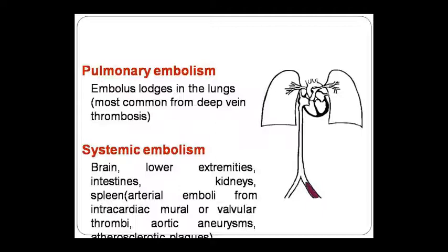The course of pulmonary embolism depends on the size of the embolus. If it is very small, it passes through smaller branches and lodges in alveolar vessels. If it is very large, it lodges at the bifurcation of the pulmonary trunk — called saddle embolism — which can cause sudden death. If a person has an inter-atrial septal defect or inter-ventricular septal defect, the embolus can pass from the right side of the heart to the left side and enter the systemic circulation — this is called paradoxical embolism.